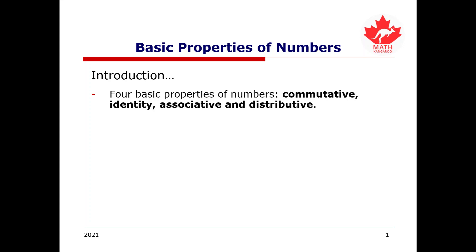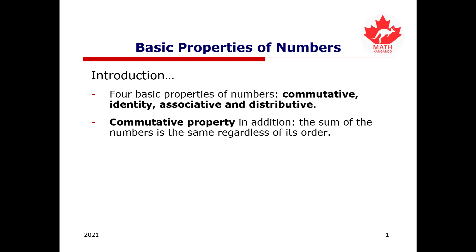For the commutative property, in addition, the sum of the numbers is the same regardless of its order. For example, if we have 1 plus 2 or 2 plus 1, these will both give us the same answer. It doesn't matter which number comes first — you're always going to get the sum, and in this case, you're going to get 3 for both of them.